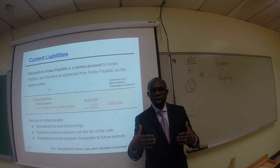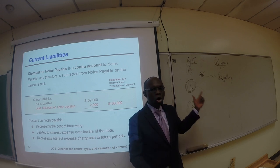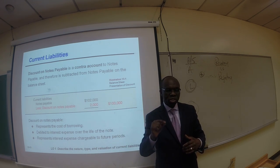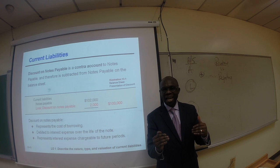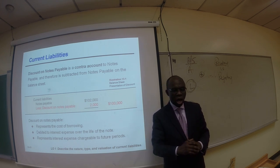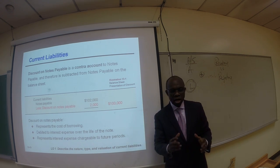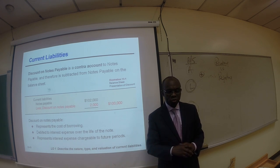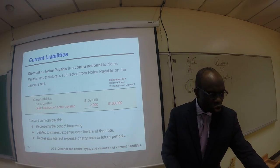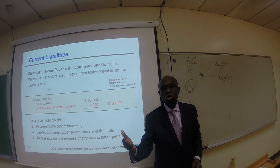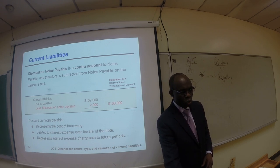On day one, if we were to report this transaction on the balance sheet, under current liabilities we show notes payable at $102,000 less discount on notes payable of $2,000. Discount on notes payable is a contra account to notes payable — notes payable has a normal credit balance while discount on notes payable has a normal debit balance. Subtracting $2,000 from $102,000 gives you $100,000. So on day one we are actually obligated for only $100,000, but at the end of four months we will owe $102,000.